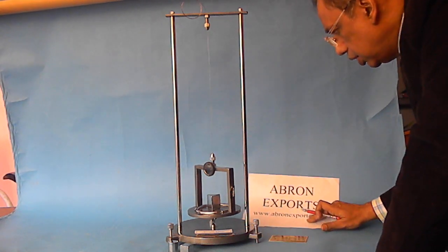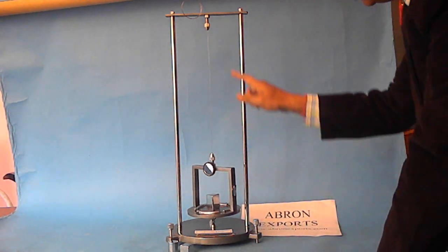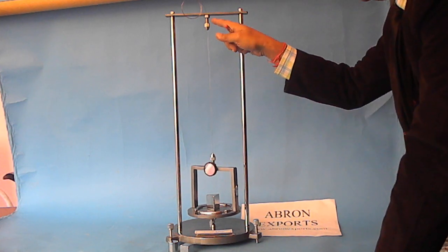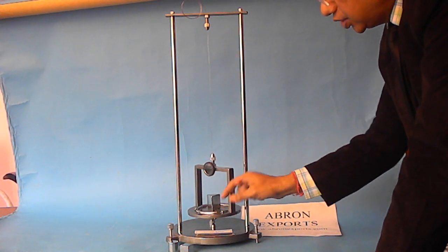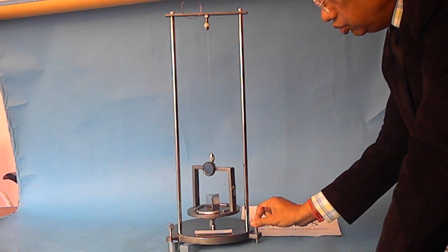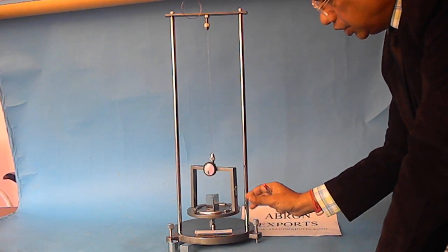By Abron Export, you can see these products. There is one wire which is hanging from the pin, while another one is at the bottom. There are weights. This has a leveling screw - you have to level it first so that this is hanging freely inside.